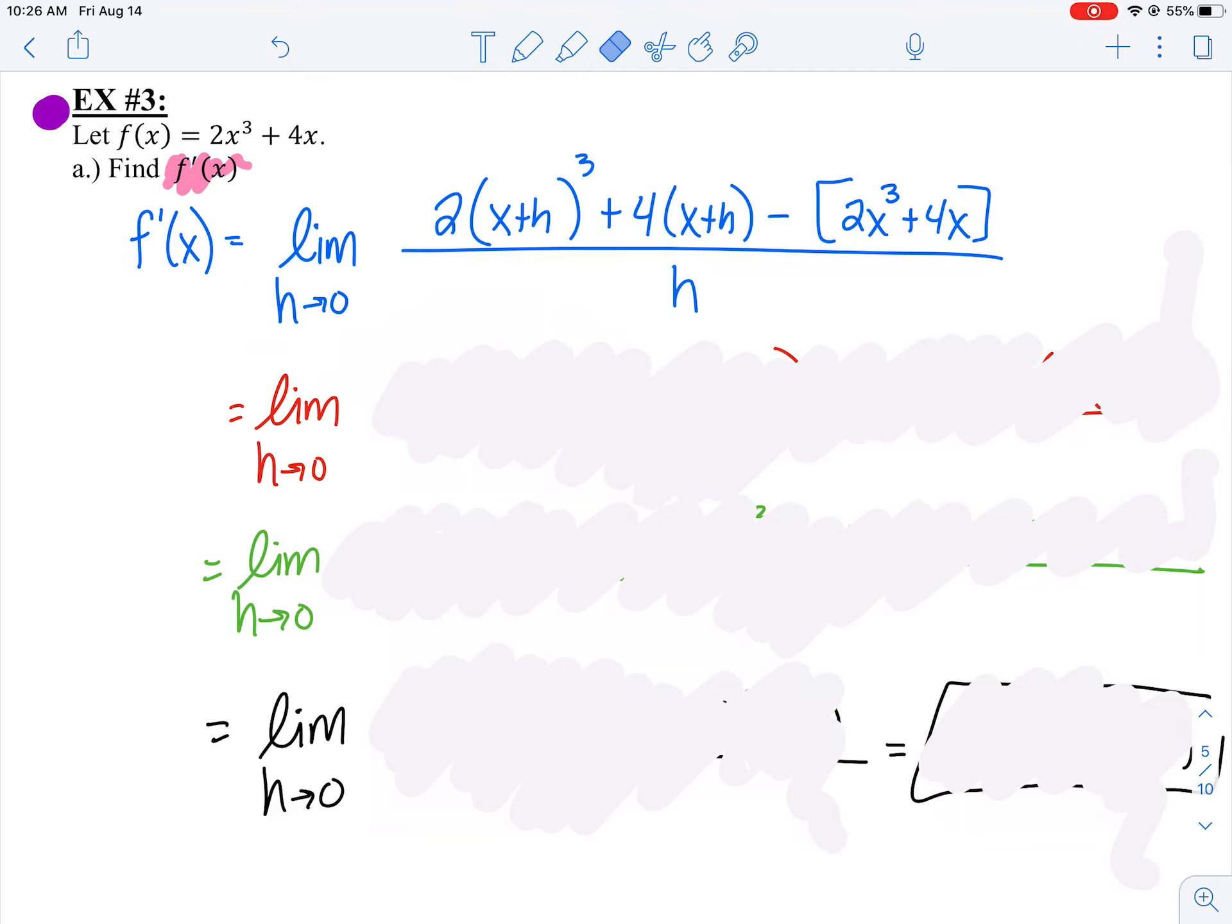Wherever I see an x in my equation, I'm going to plug in x+h. So I have 2(x+h)³ + 4(x+h) - that's f(x+h) - minus f(x), which is 2x³ + 4x.